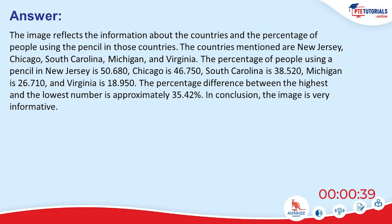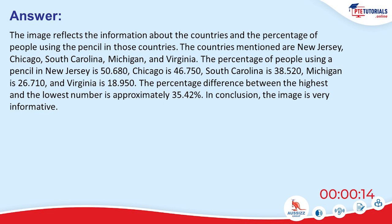The image reflects information about countries and the percentage of people using pencils. The locations mentioned are New Jersey, Chicago, South Carolina, Michigan, and Virginia. The percentage of people using a pencil in New Jersey is 50.680%, Chicago is 46.750%, South Carolina is 38.520%, Michigan is 26.710%, and Virginia is 18.950%. The percentage difference between the highest and the lowest number is approximately 35.42%.